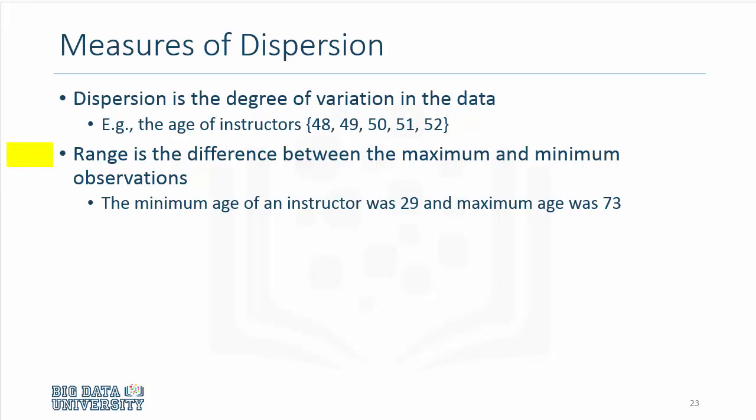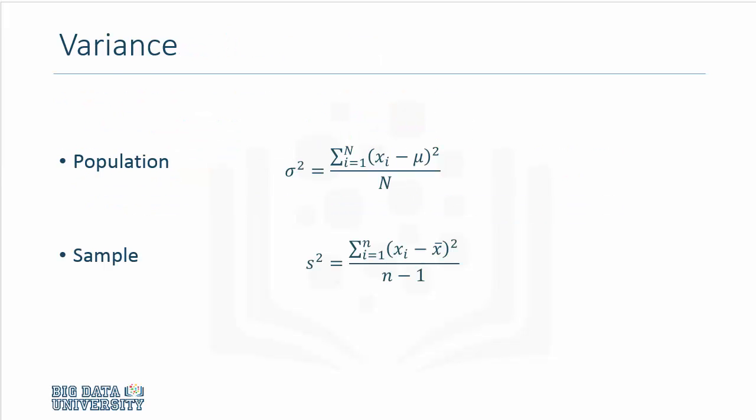The other thing to note is the range. And in our data set, for example, the range is from a minimum of 29 years of age to a maximum of 73 years. And it's the distance or the difference between the minimum and the maximum.